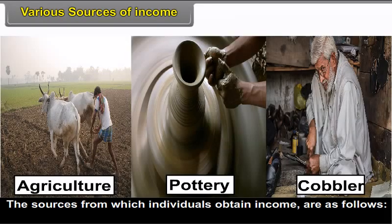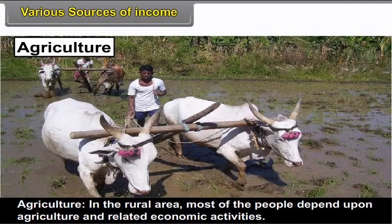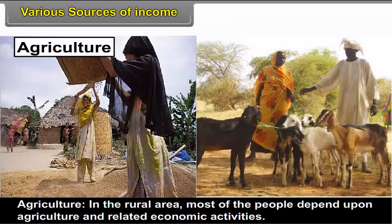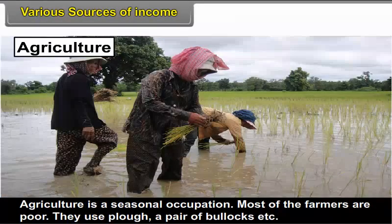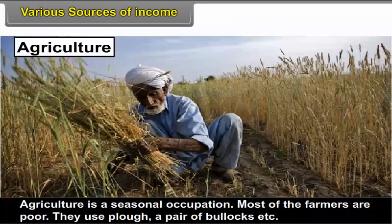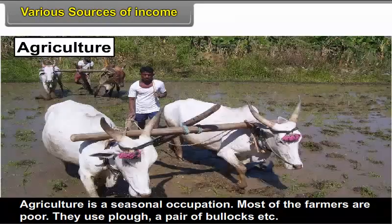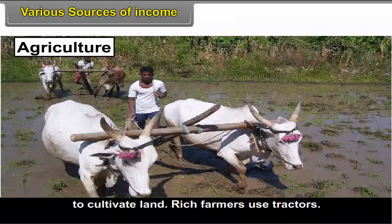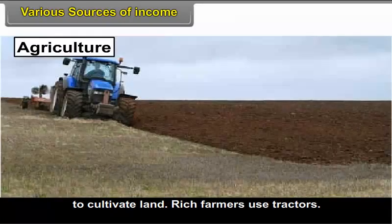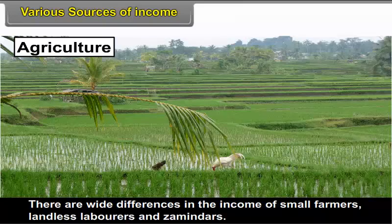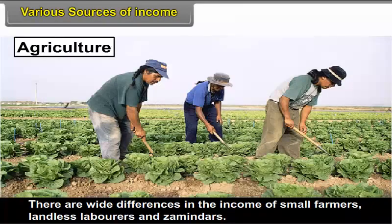3.3 Various Sources of Income. The sources from which individuals obtain income are as follows. In rural areas, most of the people depend upon agriculture and related economic activities. Agriculture is a seasonal occupation. Most of the farmers are poor and use plough, a pair of bullocks, etc. to cultivate land. Rich farmers use tractors. There are wide differences in the income of small farmers, landless laborers and zamindars.